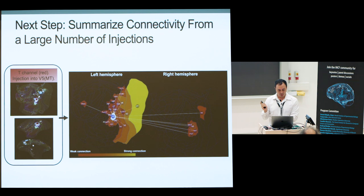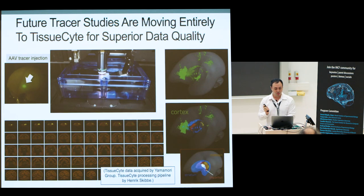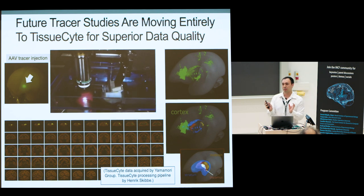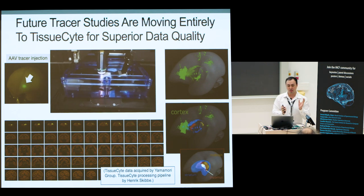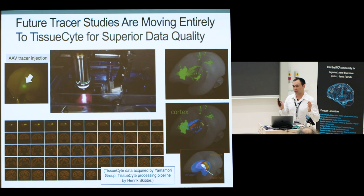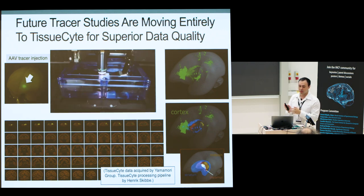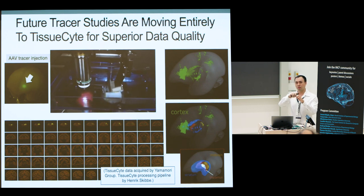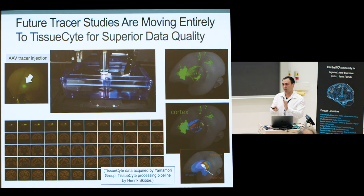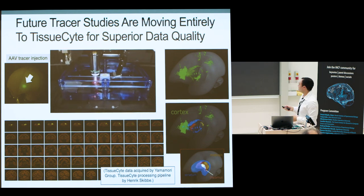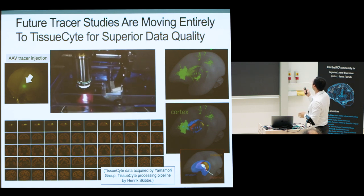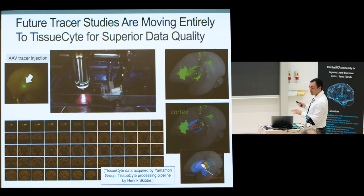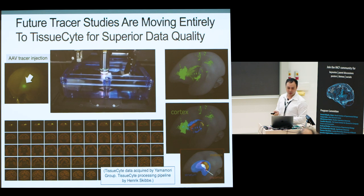Moving forward, the project is transitioning from the NanoZoomer batch slide scanner to the tissue SITE system for superior data quality. In the previous five years there were tracer injection activities using the batch slide scanner and the tissue SITE system, but now the project has consolidated efforts into the tissue SITE system because it sections and images the brain together, giving a very nice 3D reconstruction without alignment problems. Here the tracer signal is mapped into common space, and the cortex and some subcortical structures have been delineated.